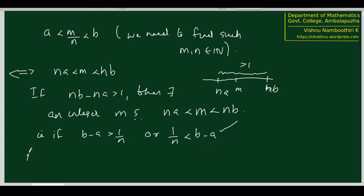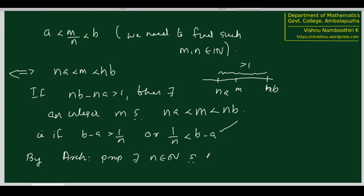What is meant by difference greater than 1? That is, this is possible if B minus A greater than 1 by N, or equivalently 1 by N less than B minus A. But we have seen that B is greater than A, therefore B minus A is positive. We have already seen as part of the Archimedean property that if Y is greater than 0, then we can find a natural number N such that 1 by N is less than B minus A. Therefore such an N can be found. So by the Archimedean property, there exists a natural number N such that 1 by N less than B minus A.